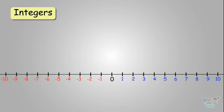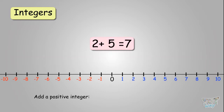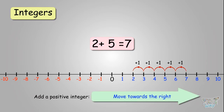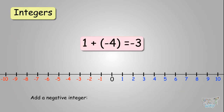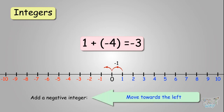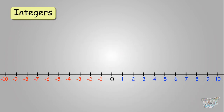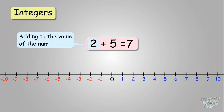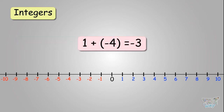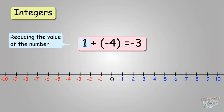We learned that if you add two positive integers, we move to the right. If you are adding a negative integer, we move towards the left. Adding a positive integer means we have to add the value of the number, but if we are adding a negative integer, it means we are reducing the value of the number.